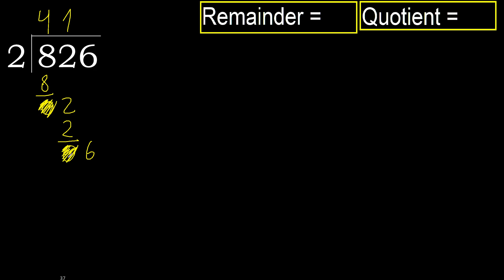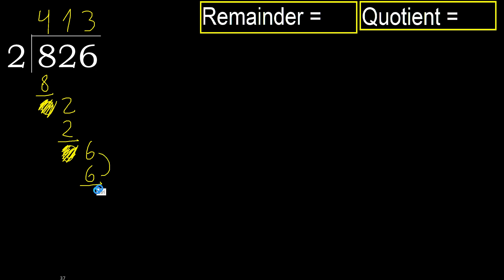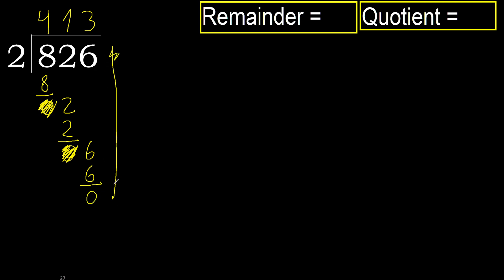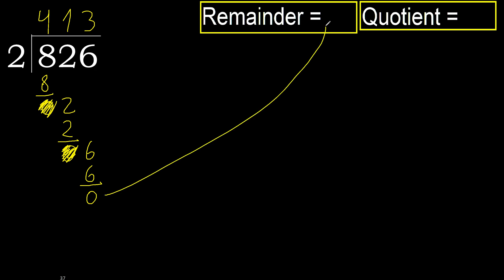Bring down: 06. 2 multiplied by 4 is 8, it's greater. Multiplied by 3 is 6, it's not greater. Subtract. Next. There is no next number, therefore finish it.